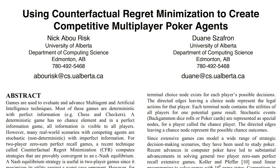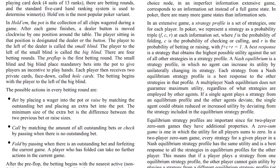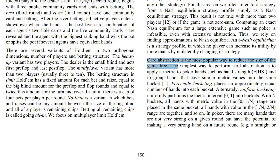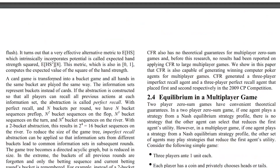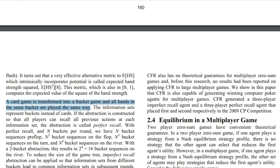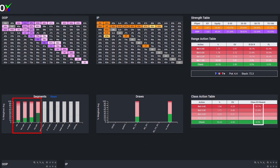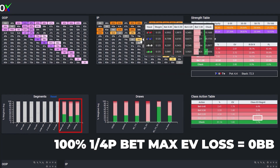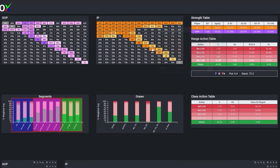Poker AI systems have been utilizing bucketing based on hand strength for over a decade because hands that share similar strength will often share common incentives, and when hands share common incentives, they can often be played the same way without major EV loss. Every single player in the world, whether they are conscious of it or not, utilizes bucketing in one way or another. GTO Check is the first system that allows users to bucket hands in a systematic, customizable, and quantifiable manner, which we will describe in this video.